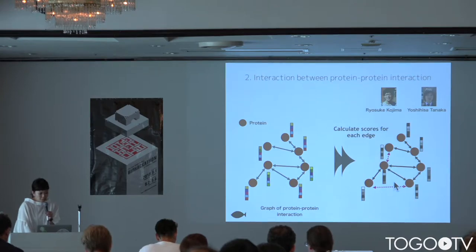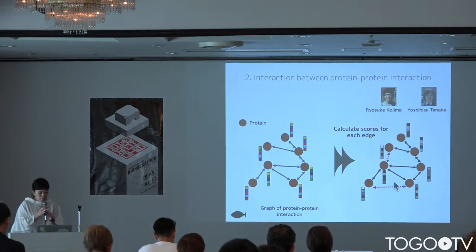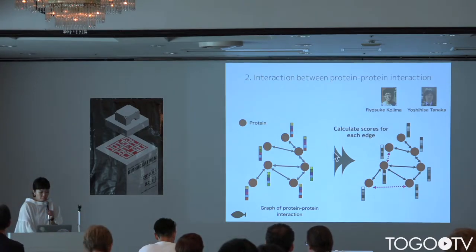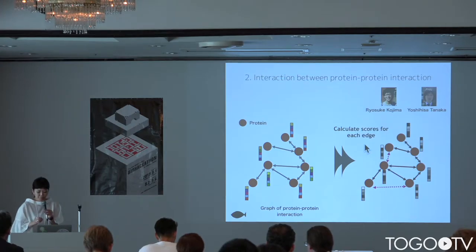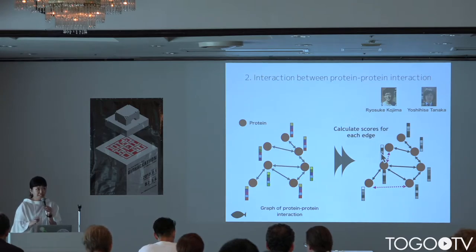The second task is link prediction with GCN. It is a predictor of interaction between proteins. In the GCN framework, it calculates scores for all edges between nodes, and using this score we estimate the interaction between proteins.